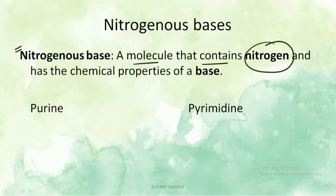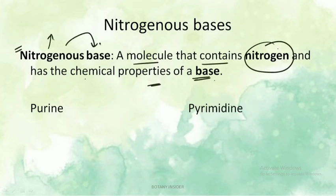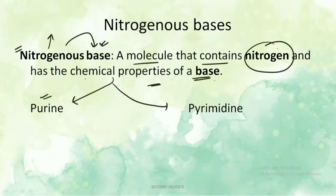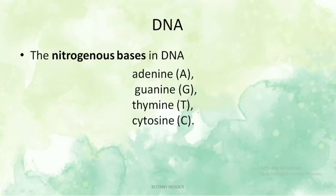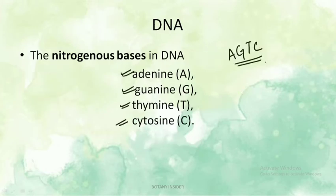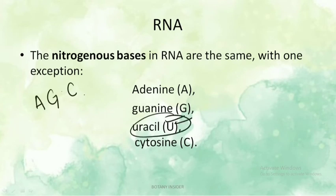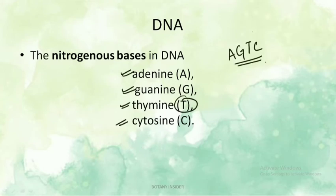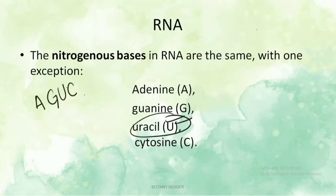A nitrogenous base is a molecule that contains nitrogen and has the chemical properties of a base. They are of two types: purines and pyrimidines. In DNA, the four nitrogenous bases are adenine (A), guanine (G), cytosine (C), and thymine (T). In RNA, adenine, guanine, and cytosine are the same, but instead of thymine, RNA has uracil.